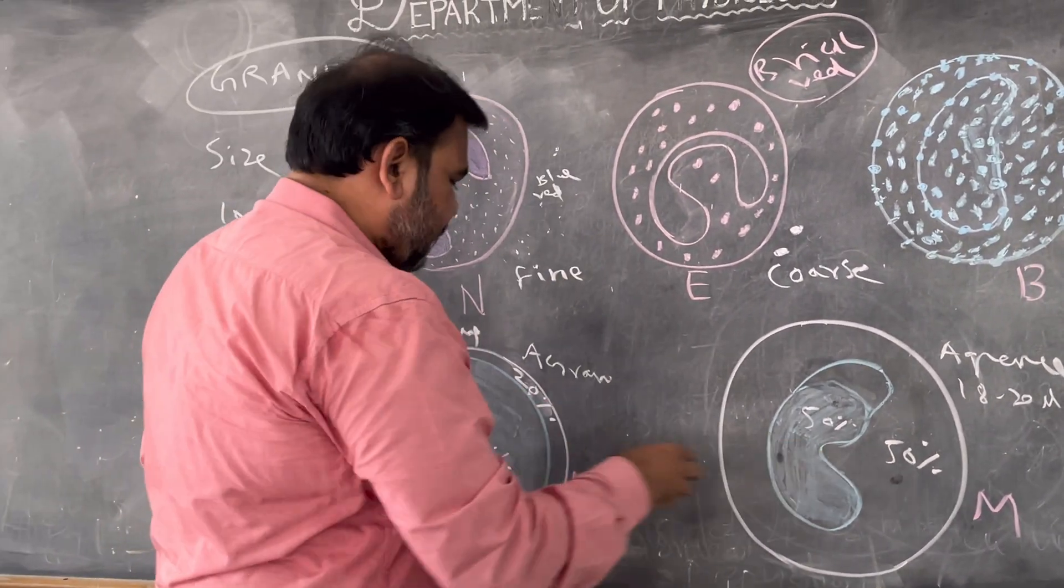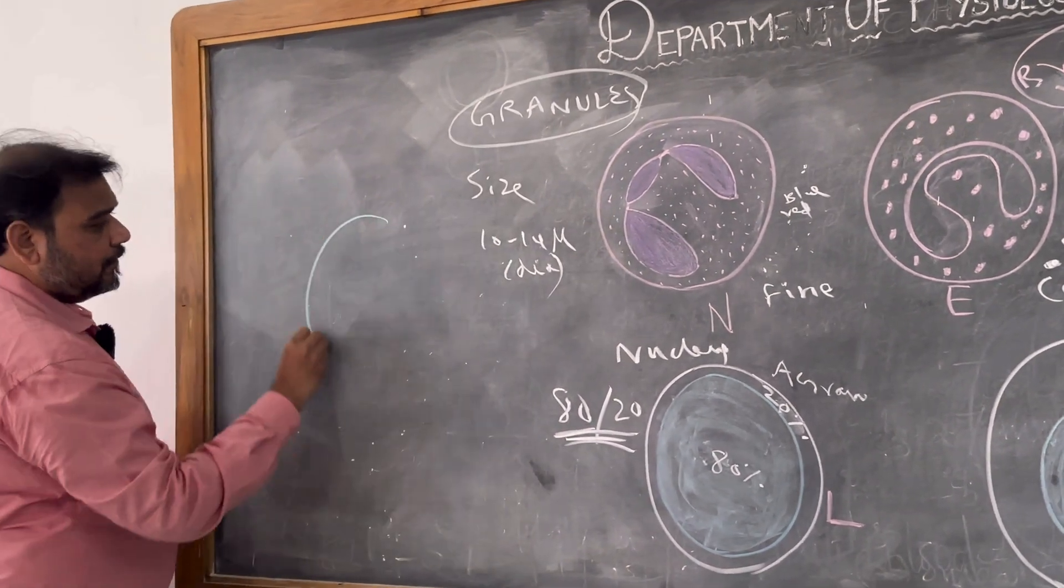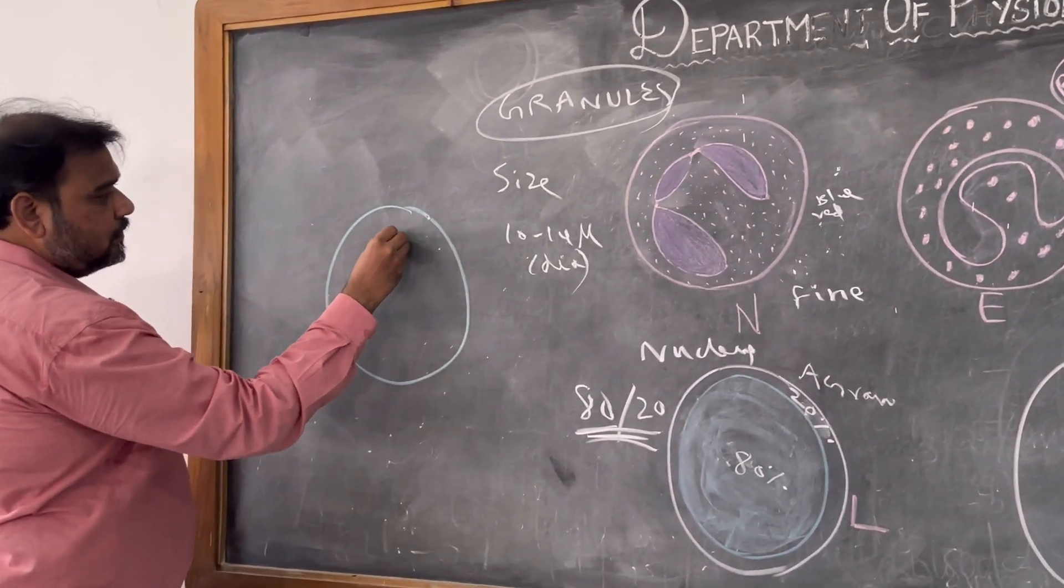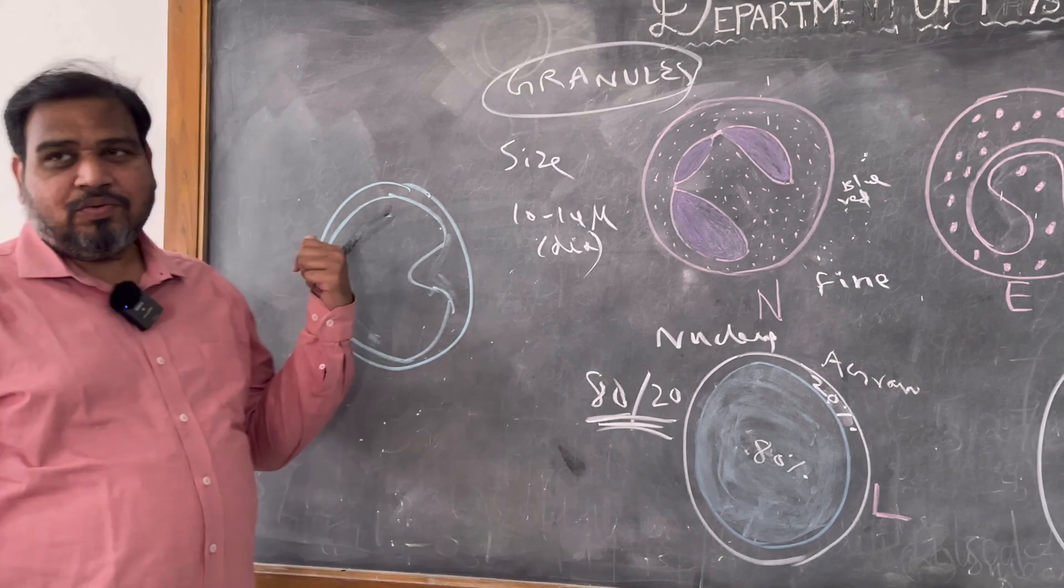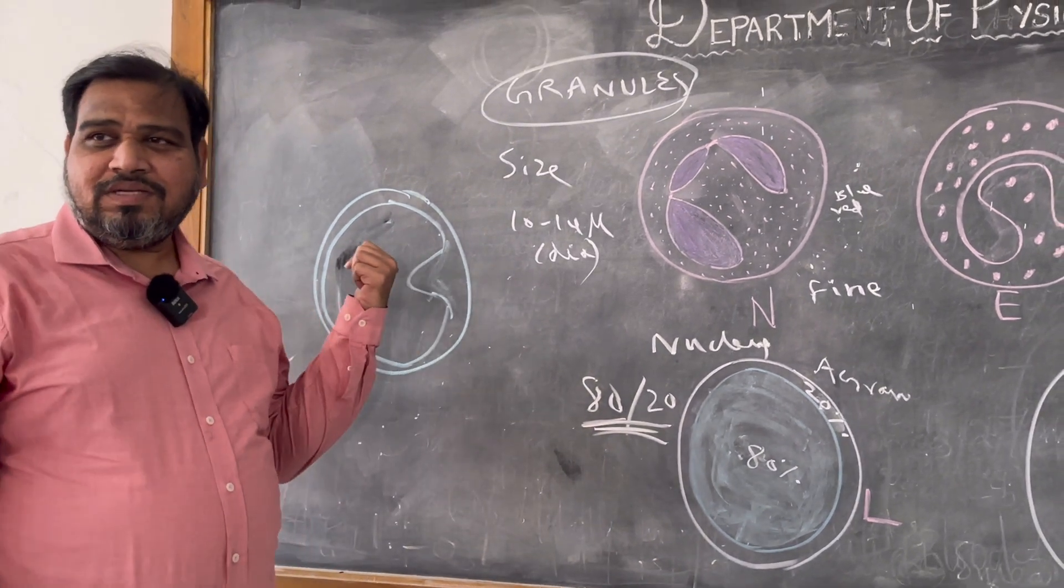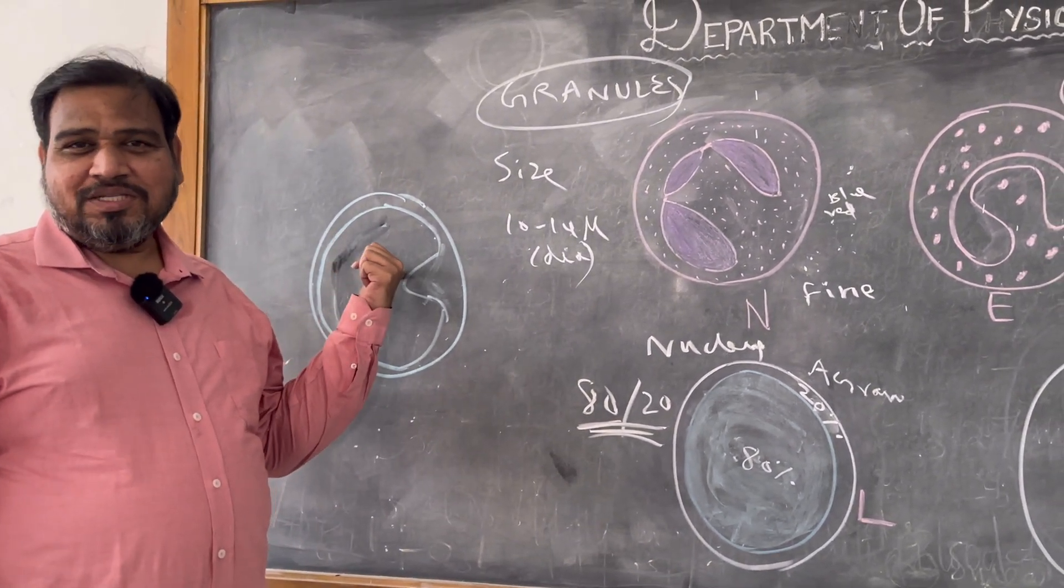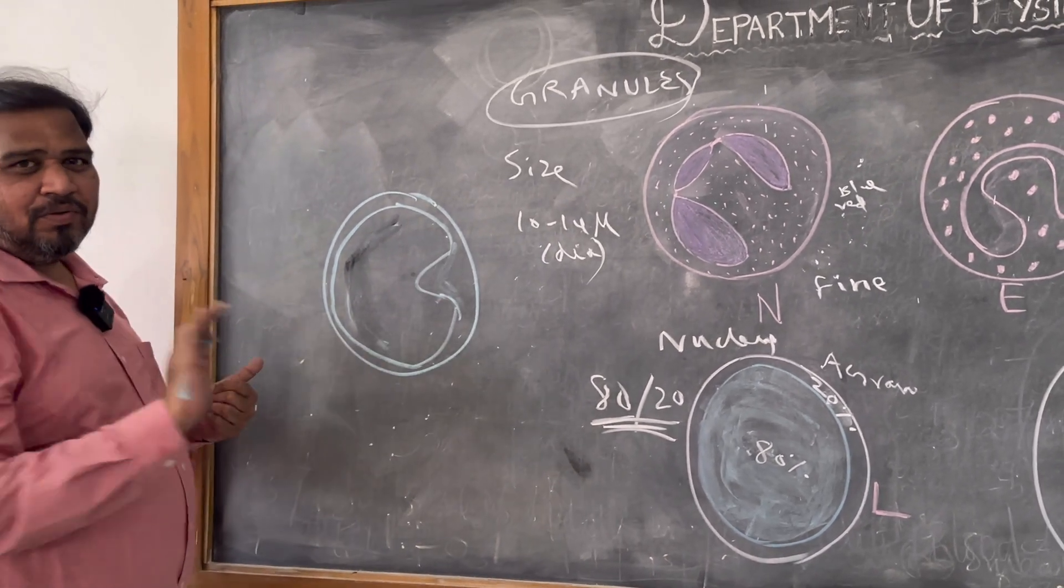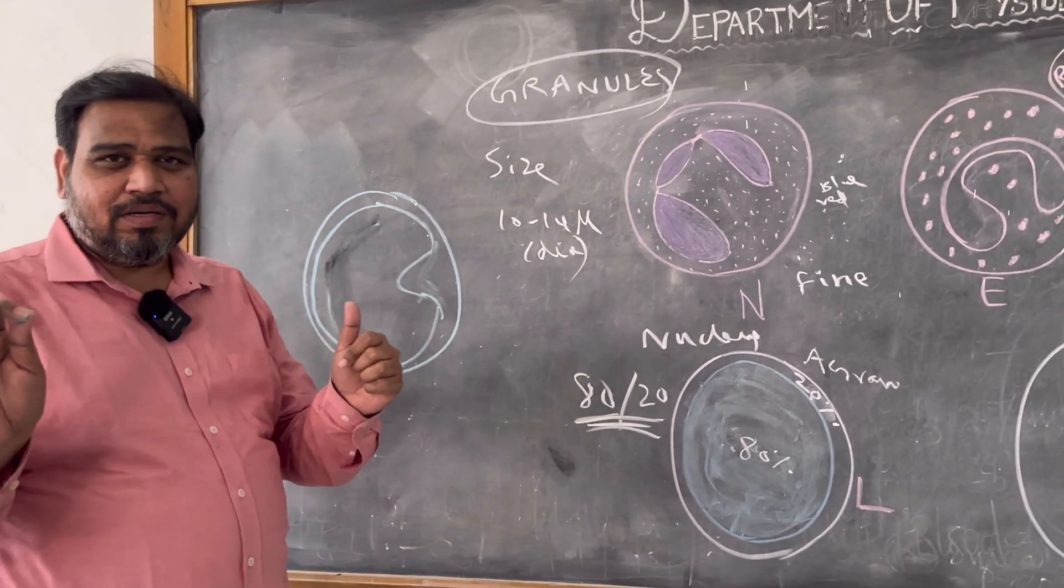And one more thing: you usually will tell kidney shape. For example, I will ask a student: can you tell me what is this WBC? Most of the students will tell monocyte because it is kidney shaped. No.